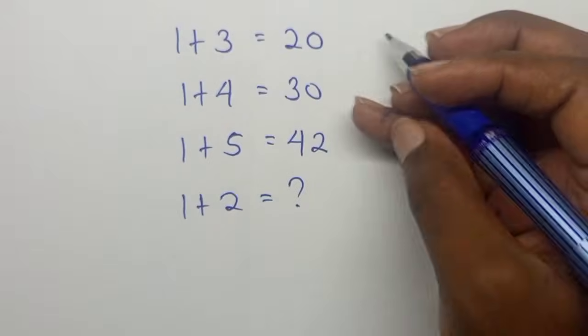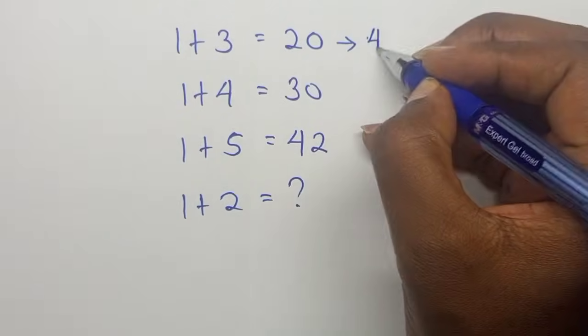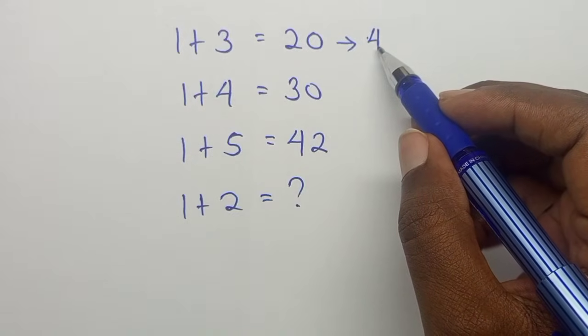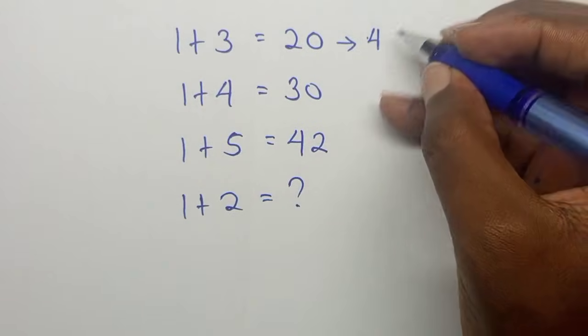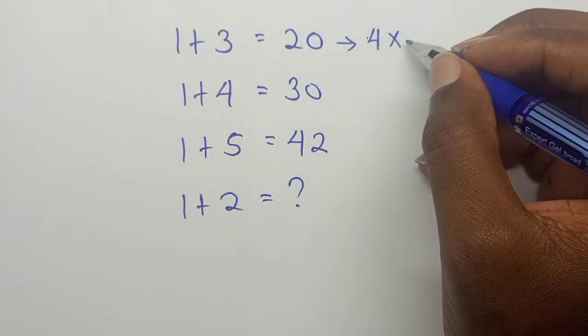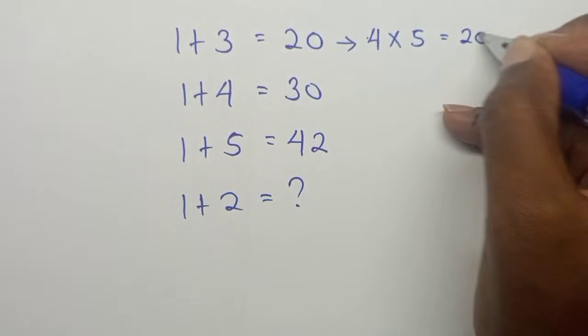So 1 plus 3 gives us 4. Now to come up with 20, what did they do to the 4? They multiplied 4 times its predecessor, which is 4 plus 1, which is 5, to get 20.